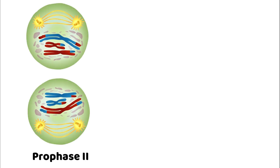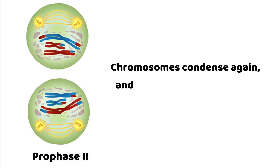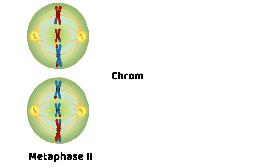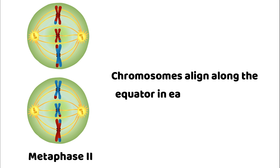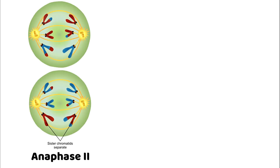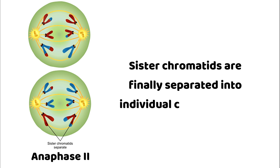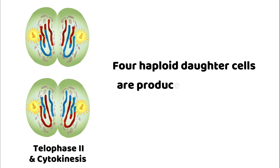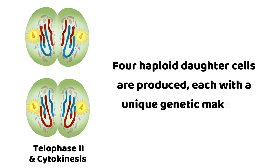Meiosis 2 — Prophase 2: chromosomes condense again and a new spindle apparatus forms in both daughter cells. Metaphase 2: chromosomes align along the equator in each haploid cell. Anaphase 2: sister chromatids are finally separated into individual chromosomes. Telophase 2: four haploid daughter cells are produced, each with a unique genetic makeup.